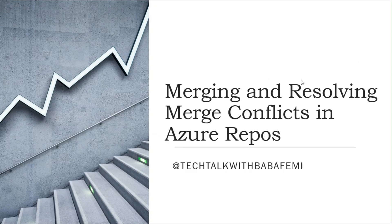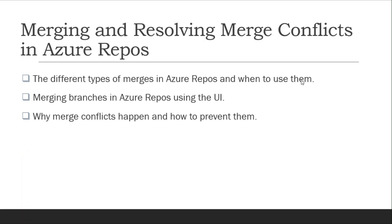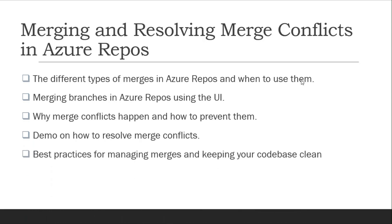If you have ever worked in a team using Git, you know that merging code is an essential part of the development process. But sometimes things don't go as smoothly as expected — you end up with what we call merge conflicts. In this video, we'll cover the different types of merges in Azure Repos and when to use them, look at merging branches using the UI, explore why merge conflicts happen and how to prevent them, and then have a demo on how to resolve them.